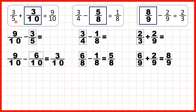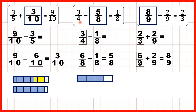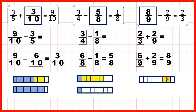Let's review what we did. For the first question, we started with 3 fifths and knew something had been added to make 9 tenths. We changed 3 fifths to 6 tenths, and subtracting 6 tenths from 9 tenths gives 3 tenths. For the middle question, we had 3 quarters and knew something had been subtracted to make 1 eighth. Since 3 quarters equals 6 eighths, we can see that 5 eighths must have been subtracted to leave just 1 eighth. Finally, we knew 2 ninths had been subtracted to leave 2 thirds. Since 2 thirds equals 6 ninths, we add 2 ninths to get 8 ninths altogether — that was our missing minuend.